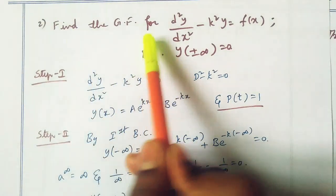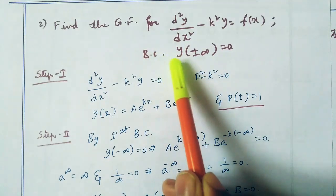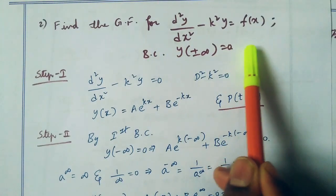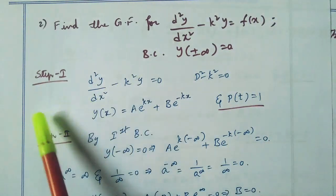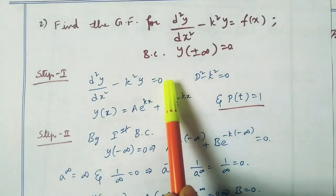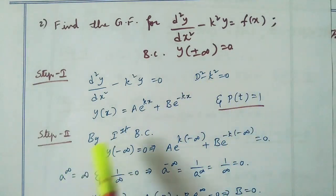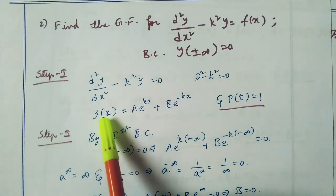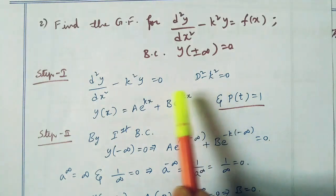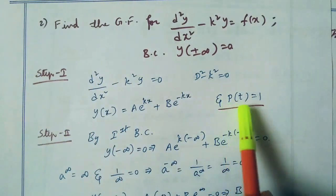The second problem: find the Green's function for d²y/dx² minus k²y equal to f(x), with boundary conditions y(±∞) equal to 0. This is a very important problem. Step 1: the homogeneous equation d²y/dx² minus k²y equal to 0, and the general solution is y(x) equal to a·e^(kx) plus b·e^(-kx). The coefficient of the second derivative term gives p(t) equal to 1.